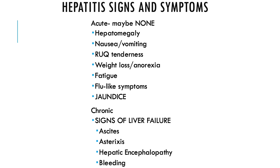Looking at signs and symptoms — if they have acute hepatitis, they could have no symptoms at all. But if they do, symptoms include hepatomegaly, which is enlargement or swelling of the liver, nausea, vomiting, right upper quadrant tenderness because that's where the liver is, weight loss, anorexia, poor appetite, general fatigue, and flu-like symptoms, which are probably the most common things you'll see.